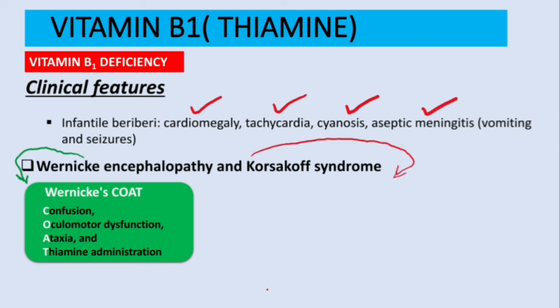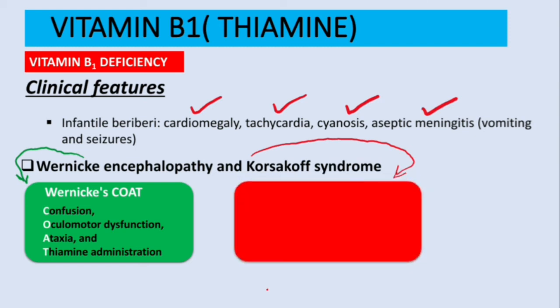Korsakoff syndrome is an advanced, chronic, and irreversible stage. The mnemonic is 'Korsakoff SCAT': confabulations, anterograde and retrograde amnesia, and altered temper. Confabulation means the patient fabricates memories — they recall events that never actually happened.